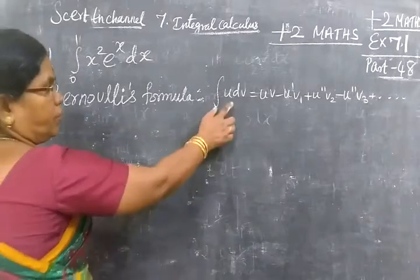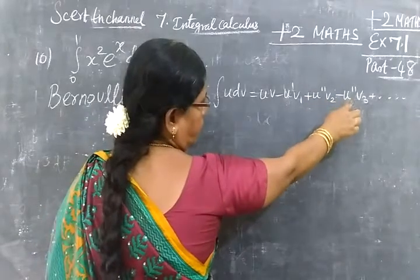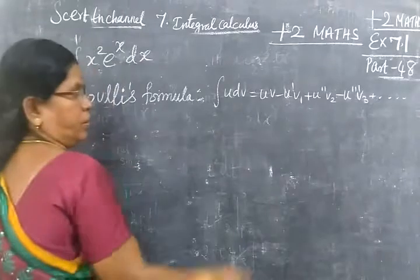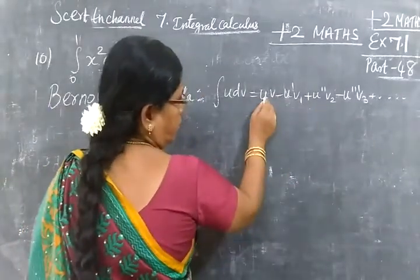Integral u dv equal to uv minus u v₁ plus u v₂ minus u v₃ plus etc. Alternative plus minus plus minus is uv.